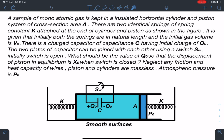A sample of monatomic gas is kept in an insulated horizontal cylinder and piston system of cross-section area A. There are two identical springs of spring constant K attached at the end of the cylinder and the piston as shown in the figure. It is given that initially both the springs are in natural length and the initial gas volume is V0.